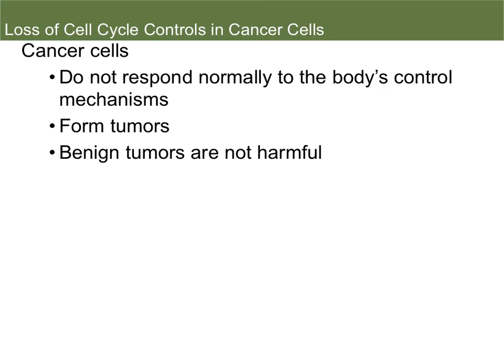When the cell cycle can't be controlled, this is what forms cancer cells. Cancer cells do not respond normally to the body's control mechanisms, so they continue to divide regardless of what is telling the cell cycle it shouldn't. When this happens, it forms tumors. Tumors can be benign or malignant — if they're benign, they're not harmful; if they're malignant, they are invasive. Tumors are simply clumps of cells that have grown abnormally.